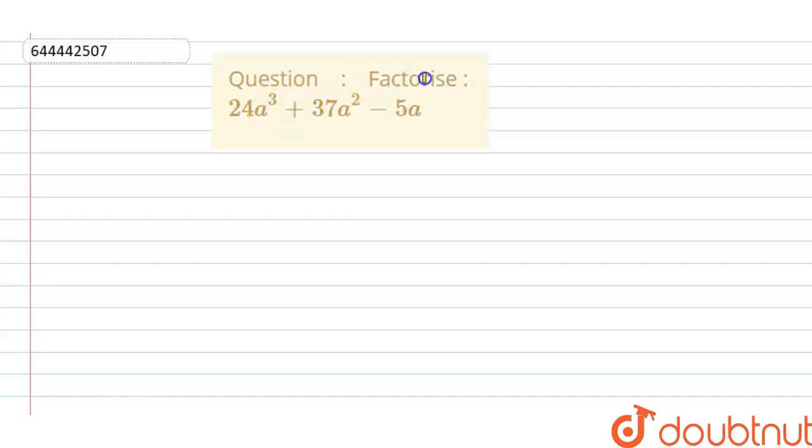Question is factorize 24a³ + 37a² - 5a. So we have to factorize the given term. Solution: firstly, 24a³ + 37a² - 5a is the given equation.